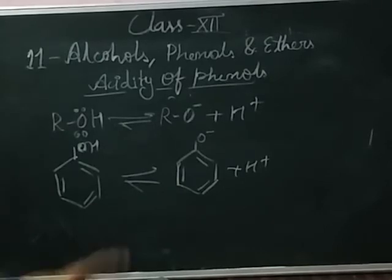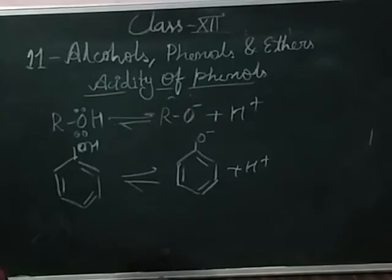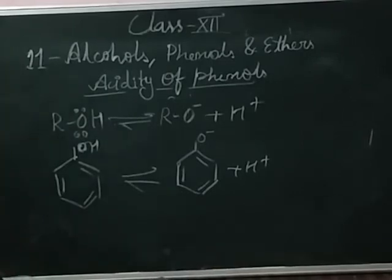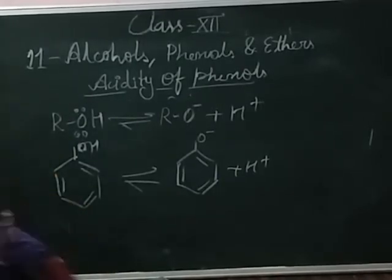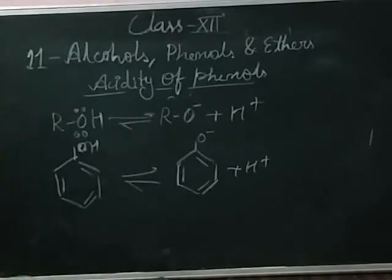Again, what is the acidity of phenol? The acidic character of phenol is shown when phenol reacts with metals or aqueous solution of sodium hydroxide. When it reacts with metal it forms sodium phenoxide, and when it reacts with aqueous solution of sodium hydroxide it again forms sodium phenoxide. This shows the acidic character of phenol, which is easily understood by the resonating structure of phenol.